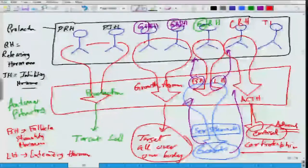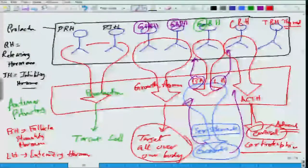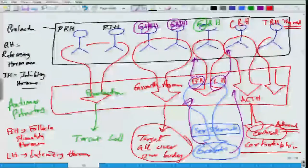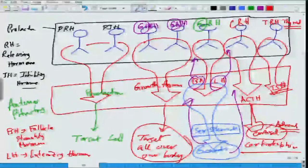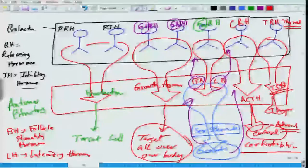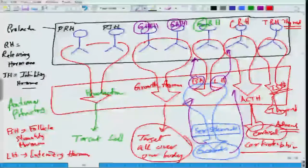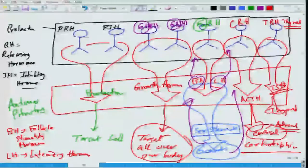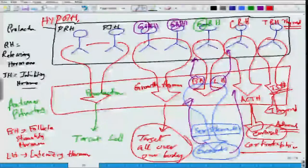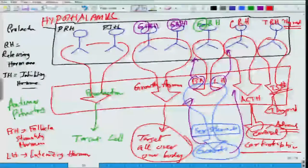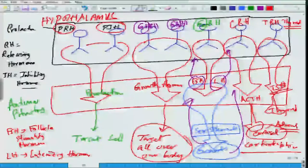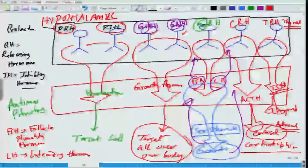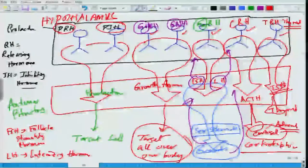Then there is TRH, thyroid releasing hormone, where T stands for thyroid. This thyroid releasing hormone reaches the pituitary, and the pituitary releases TSH, thyroid stimulating hormone. TSH then reaches the thyroid gland and leads to the secretion of T3, T4, and all other thyroid hormones. At the level of the hypothalamus, seven different kinds of inhibiting and releasing hormones are being secreted: prolactin releasing hormone, prolactin inhibiting hormone, growth hormone releasing hormone, growth hormone inhibiting hormone, gonadotropin releasing hormone, corticotropin releasing hormone, and TRH.